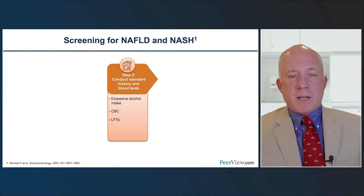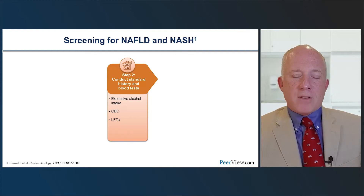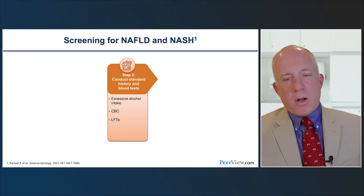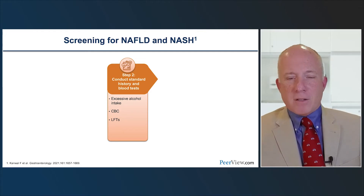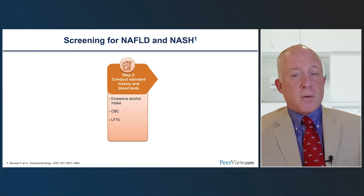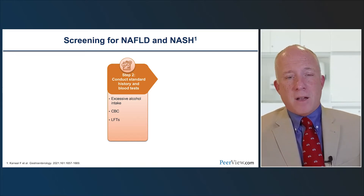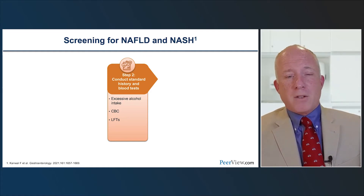For NAFLD and NASH screening, we use the FIB4 — a non-invasive, easily obtained, inexpensive test. All you need is a CBC and CMP or liver function tests. With the patient's age, AST, ALT, and platelet count, you can calculate a FIB4 score in the primary care setting. These are tests you're probably already ordering, so this fits naturally into your regular history and physical.